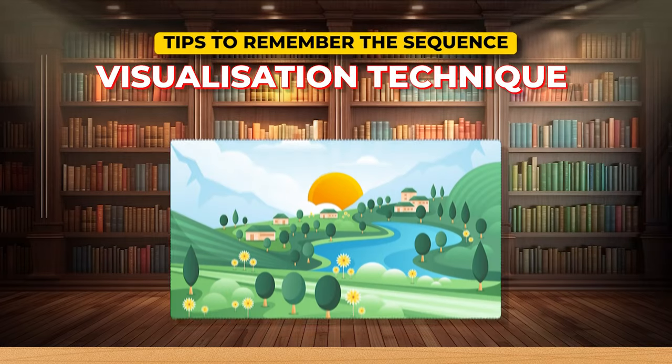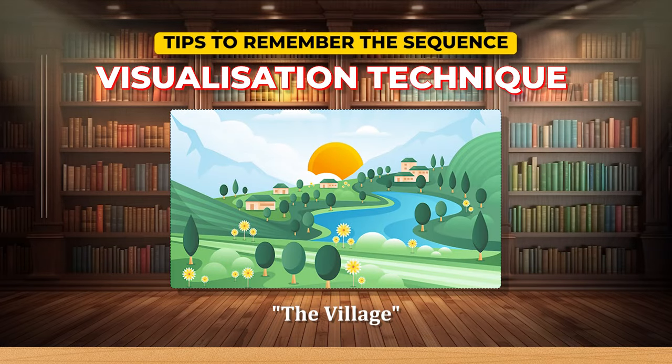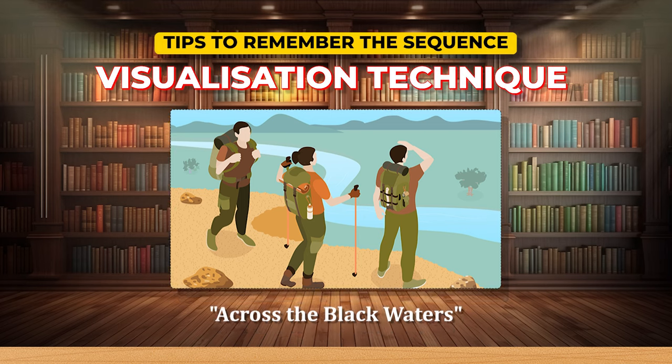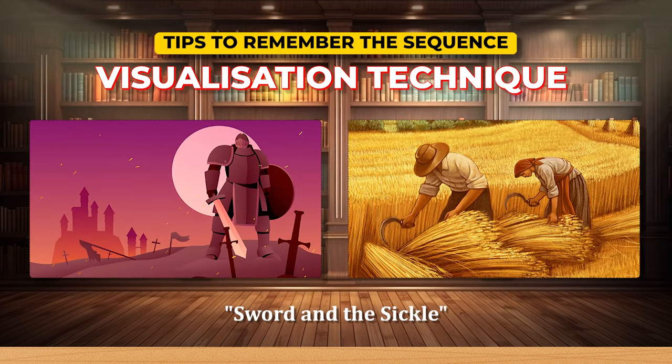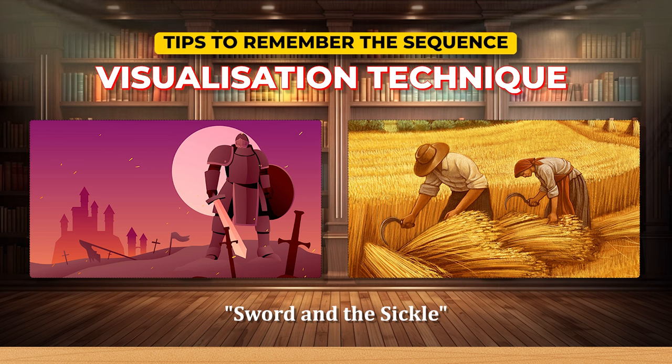The best tip to remember this entire trilogy is to picture a village situation near a river. Envision the village crossing a river — that is Across the Black Waters — and then imagine a field with a sword and a sickle. It could be a battlefield, hence the word sword; it could be a farm, hence the word sickle. This is how you remember the sequence of the three novels.